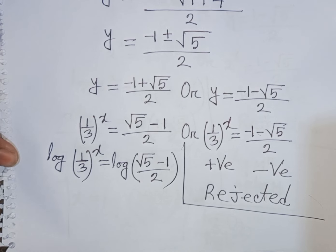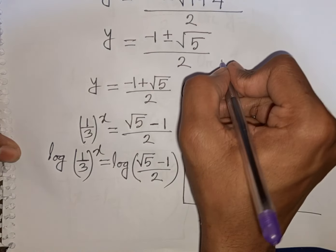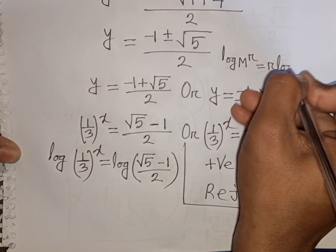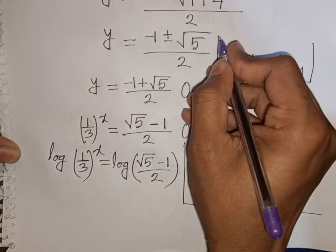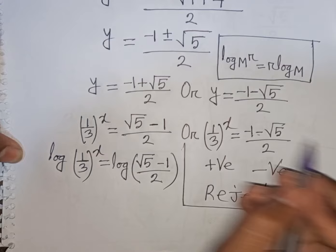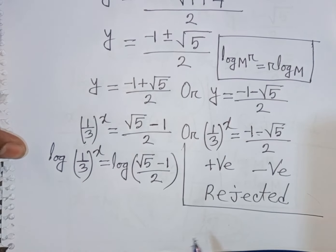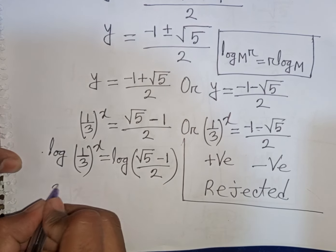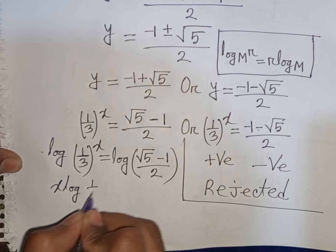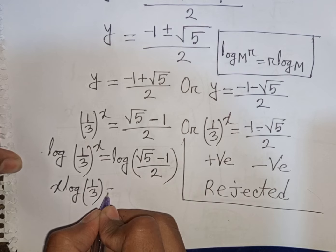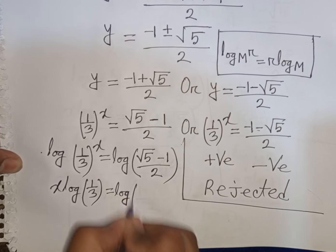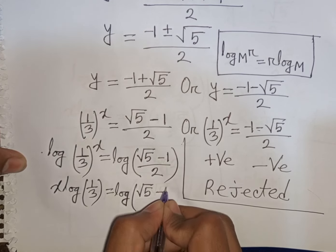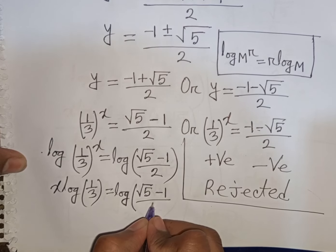Applying the log power rule log(m^r) = r·log(m), the exponent x moves in front: x · log(1/3) = log((√5 − 1) / 2).